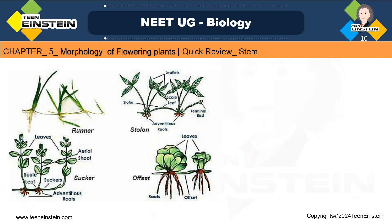The root portion we have already done and now we are going to do the stem portion. Stem — if you are drawing a plant, this is the root portion and this is the stem portion, with flowers and everything drawn above. We know the functions and types of roots. Now, stem is the part of the axis — let's see what the stem is.